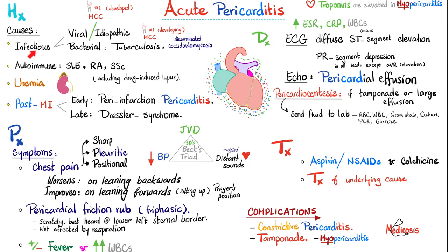Acute pericarditis causes include viral, tuberculosis, autoimmune, uremia, and post-MI. The signs and symptoms include chest pain that is sharp, pleuritic, and positional — unlike myocardial infarction, which has dull, aching pain as if an elephant is sitting on your chest. MI pain is non-pleuritic, meaning it does not change with breathing. But the pain of acute pericarditis is pleuritic — it does change with breathing, because the pericardium is near the lung pleura. When you breathe, you irritate the inflamed pericardium.